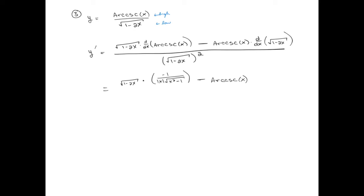and moving on for each one of these pieces, the derivative of arc cosecant from earlier is this formula, negative one over the absolute value of x square root of x squared minus one, and the derivative of the square root of one minus two x. We've got a square root on the outside, which gives us one-half parentheses to the minus one-half power. Remember,